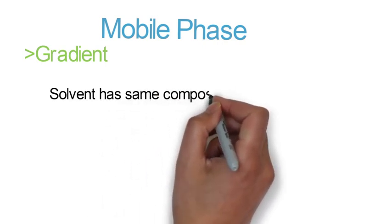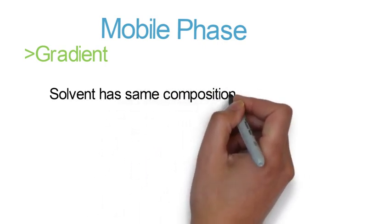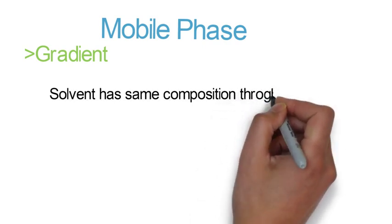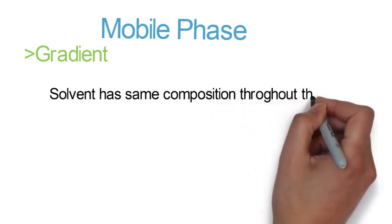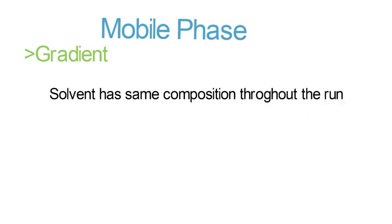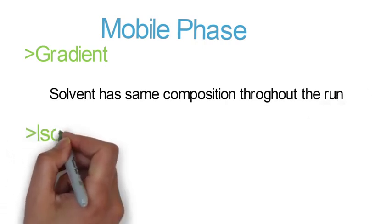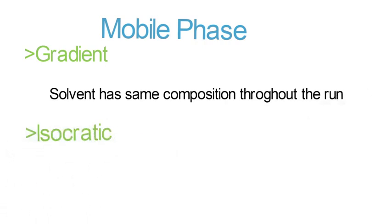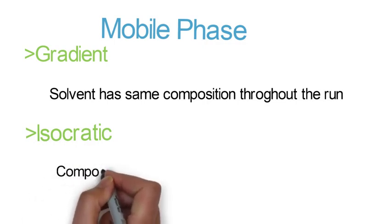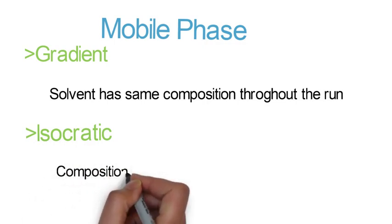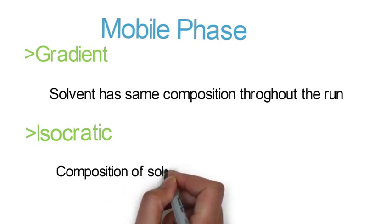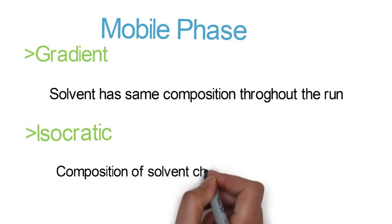And second one is isocratic, where the concentration of solvent changes throughout the run. Basically, gradient is used for single component and isocratic is used for multiple components.